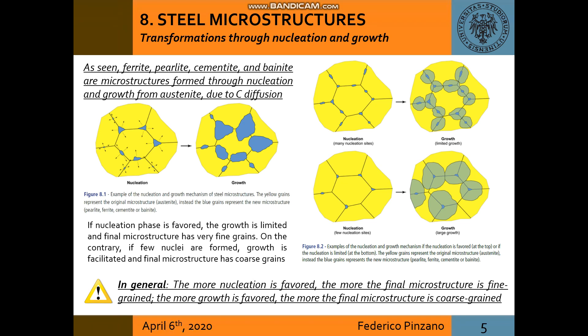Consider now the microstructures formed through nucleation and growth from austenite due to carbon diffusion. There is a general rule: the more nucleation is favored, the more the final microstructure is fine-grained, like at the top on the right. On the other hand, the more growth is favored, the more the final microstructure is coarse-grained, like at the bottom on the right.